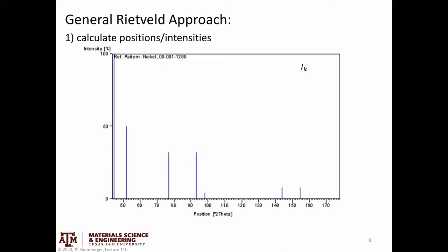In Rietveld refinement, the first thing that happens when calculating a prediction is it calculates the positions and intensities associated with diffraction from different families of peaks. For a given HKL peak, we know a multiplicity, we know a D spacing that gives us the position, and we know what atoms are in the unit cell so we can calculate a structure factor. From this information, we can calculate the expected intensity of each of these different peaks.